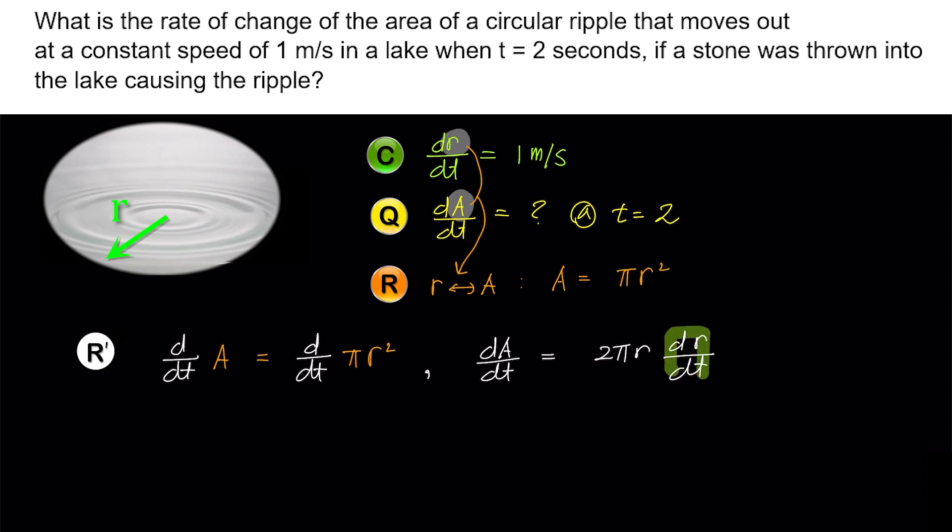Here dr/dt is given as 1 m per second in the condition, but we still don't know the value of r. However, from the condition, we know that the radius increases by 1 m per second. So at 2 seconds, the radius becomes 2 m. Therefore, the value of r is 2.